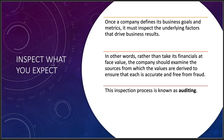Inspect what you expect — this is a really good phrase to remember. Once a company defines its business goals and metrics, it must inspect the underlying factors that drive those results: people, money, product, process, creative cycle, developmental cycle. Rather than take its financials at face value, you really should examine all the sources from which values are derived to ensure that each is accurate and free from fraud. This is known as auditing — a full, total, complete system audit of everything you would ever want to know about your company.